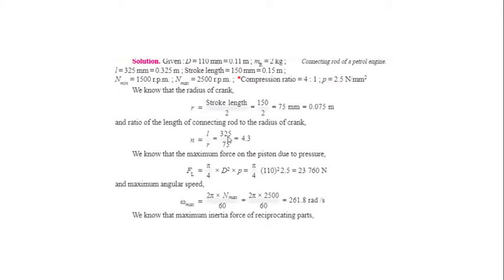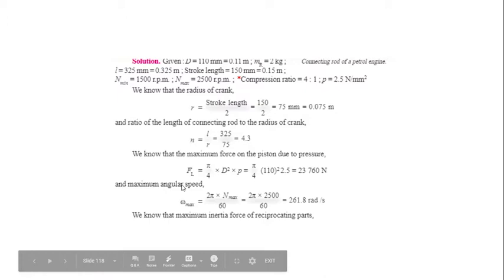The maximum force on the piston due to gas pressure is F_l = (π/4) × d² × p. This comes from the basic formula: pressure = load / area, rearranged for load. Here π/4 is a constant, diameter d = 110 mm, and pressure p = 2.5 N/mm². Substituting all values, the maximum force acting on the piston due to pressure is 23,760 N.